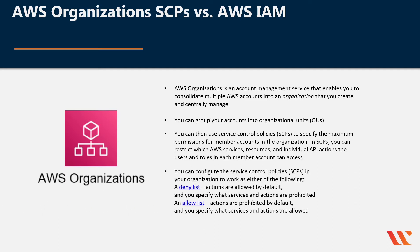You can configure Service Control Policies in your organization to work as either of the following: a deny list, where actions are allowed by default and you specify what services and actions are prohibited, or an allow list, where actions are prohibited by default and you specify what services and actions are allowed. The default configuration of AWS Organizations supports using SCPs as deny lists.